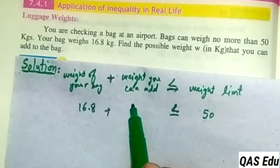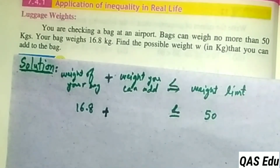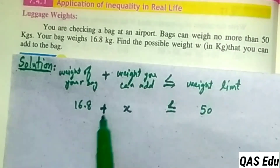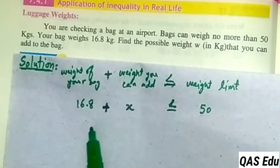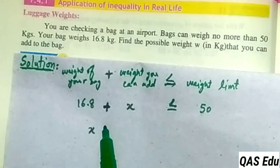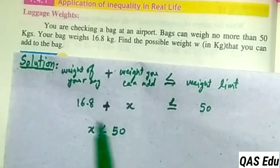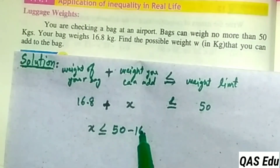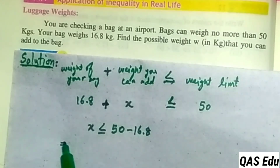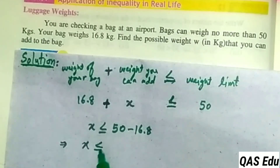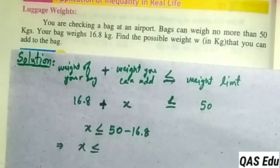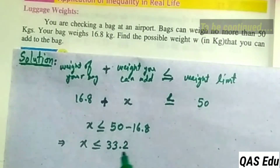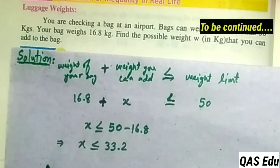Let x be the weight you can add. So: 16.8 plus x is less than or equal to 50. Moving 16.8 to the right by subtracting: x is less than or equal to 50 minus 16.8, which equals 33.2.